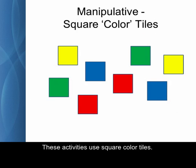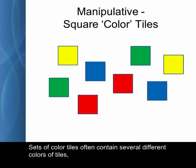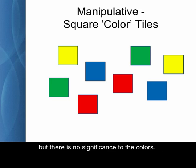These activities use square color tiles. Commercially available tiles are usually one inch square, which is ideal for measuring area and perimeter. Sets of color tiles often contain several different colors of tiles, but there's no significance to the colors.